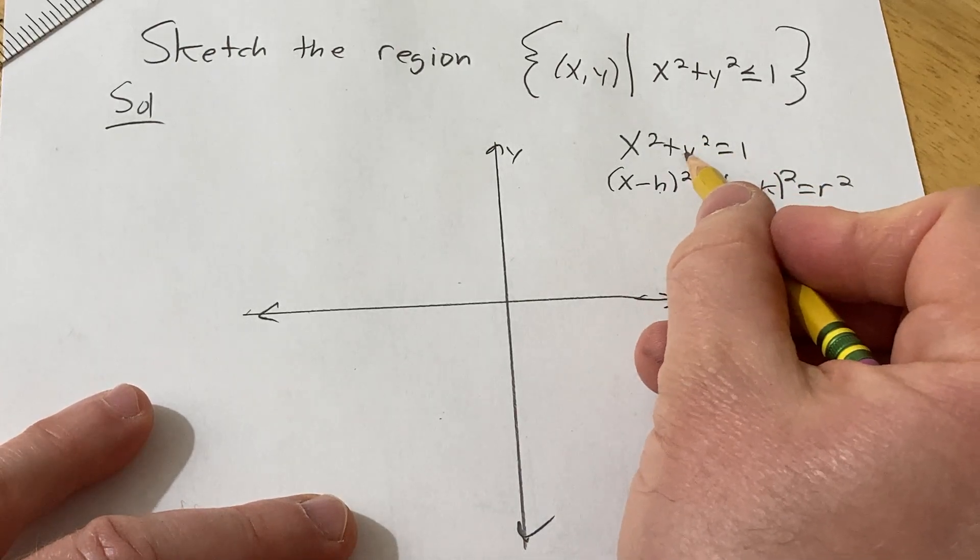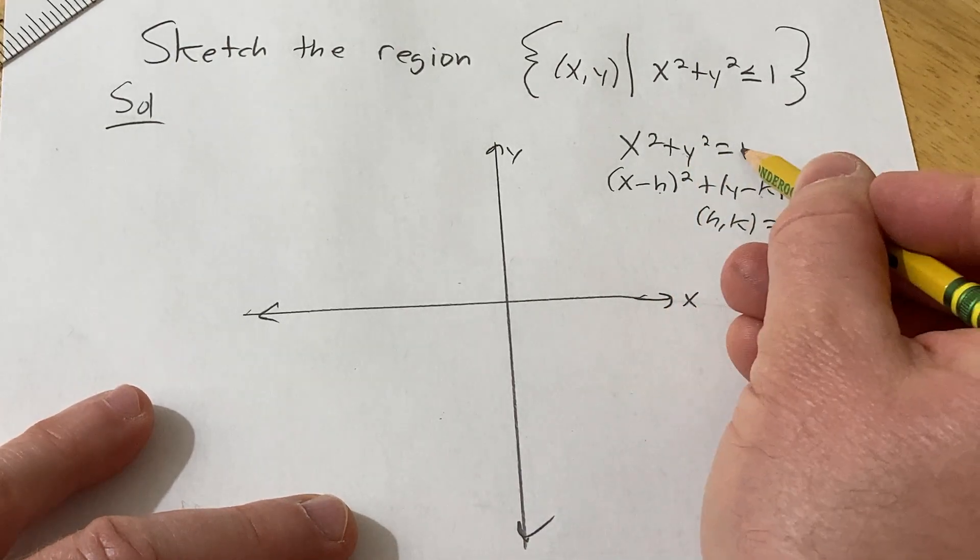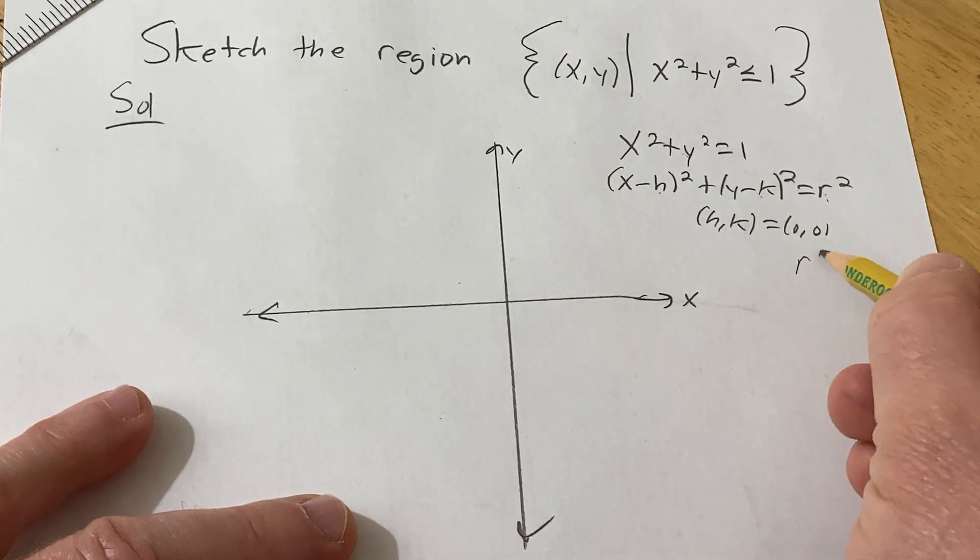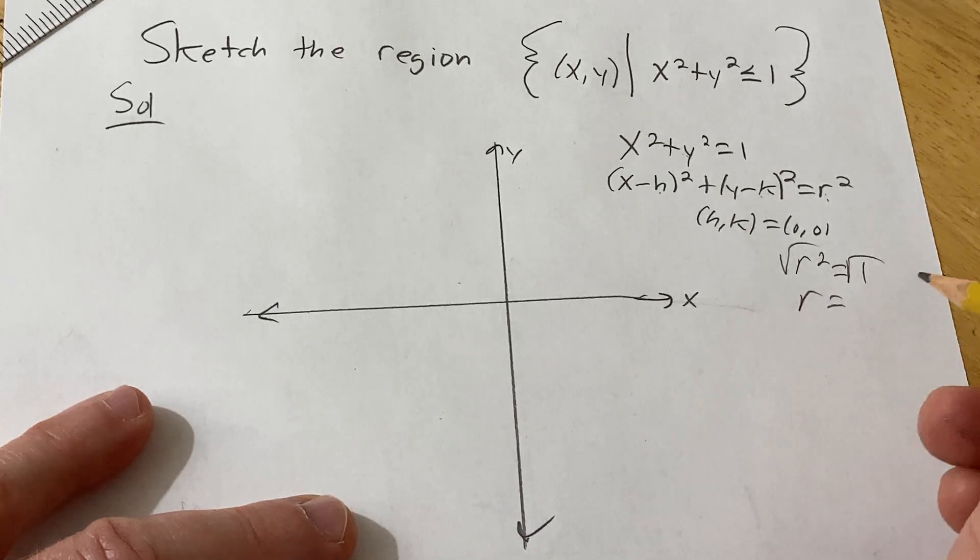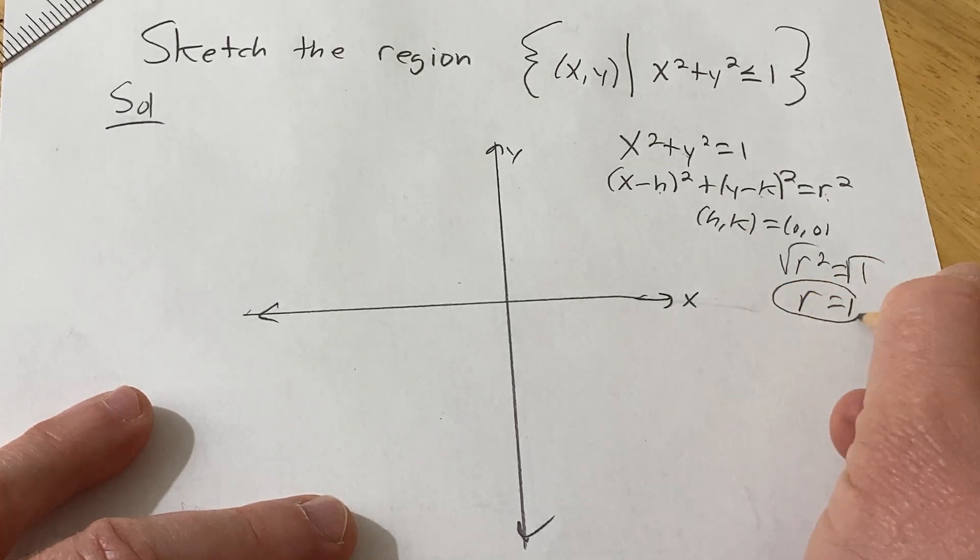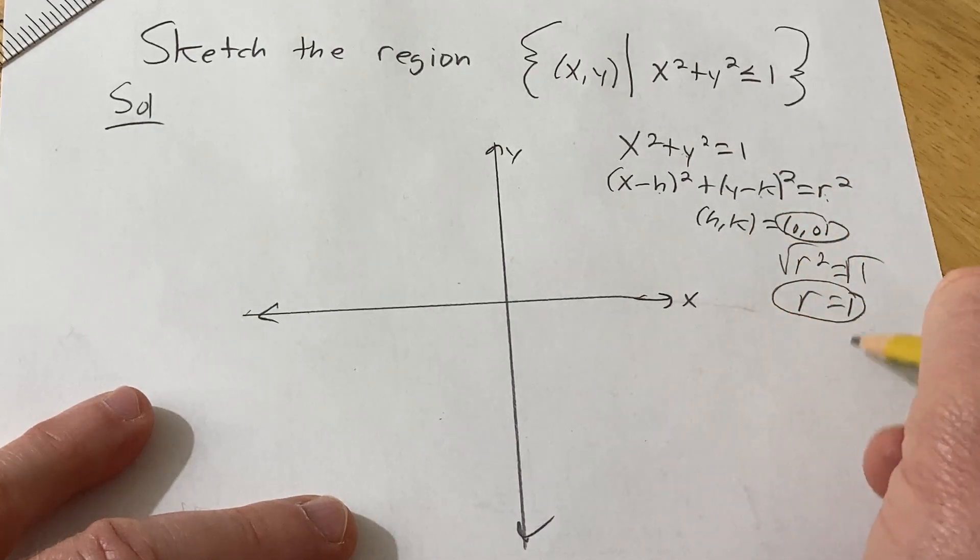So this is a circle with center (0, 0), and then r squared is equal to 1, so that means the radius is 1. Because if r squared is 1, you take the square root, you do get a plus or minus, but radius can't be negative, so it's just 1.